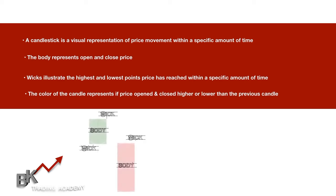Look at these two candle illustrations — they're shaped differently and have different colors. The green candle shows where price went; the top wick is the highest price reached and the bottom wick is the lowest. The red candle's body is the red part, and it has a top wick but no bottom wick — that's completely fine. Every candle does not have to have two wicks; there are even candles with no wicks at all.